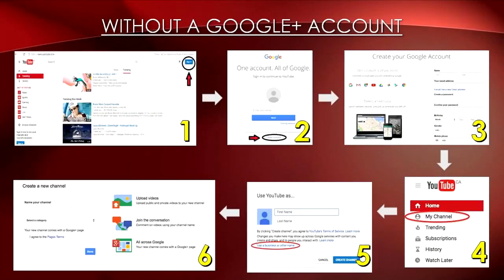On the other hand, if you don't have an existing Google account, here are the steps to create your YouTube channel. Similarly, log in to www.youtube.com, then click on Sign In on the top right corner of the page. Then select Create Account. You'll then be prompted to fill in this form to create your Google account. Once you're done creating your Google account, you'll be taken to the YouTube homepage. On your left there will be a list of tabs — click on My Channel. A pop-up like this will appear and you should click on Use a Business or Other Name. Then name your channel and select a category that best describes your business. This is also where a Google Plus page will be automatically created for you under this name as well.